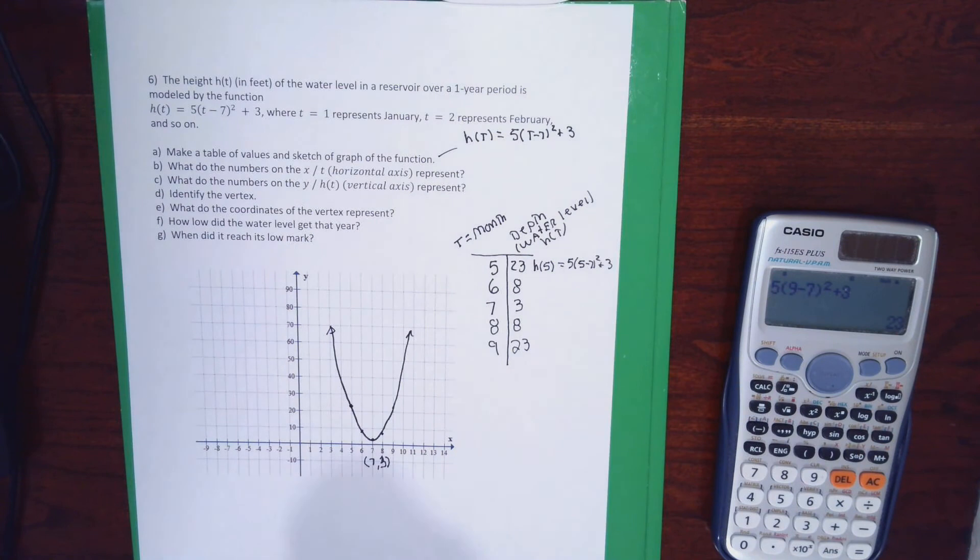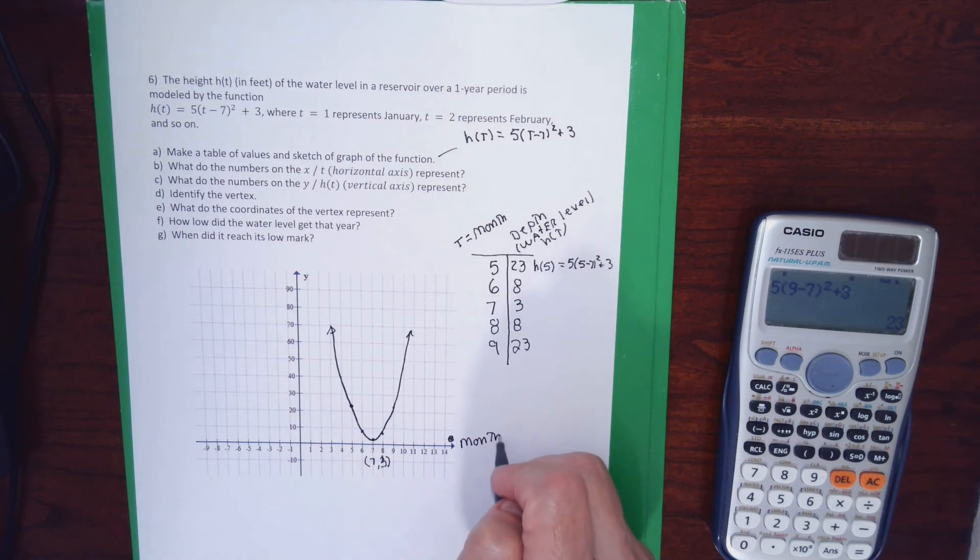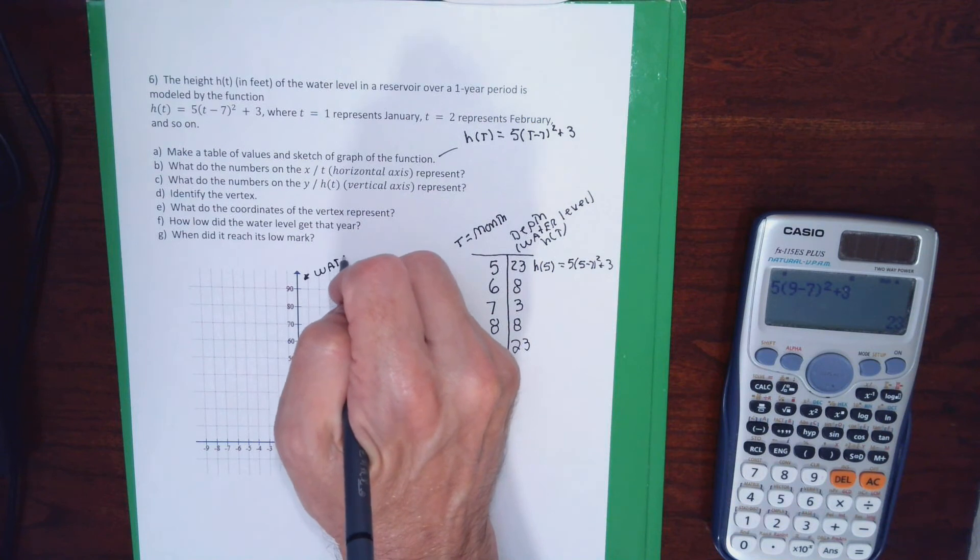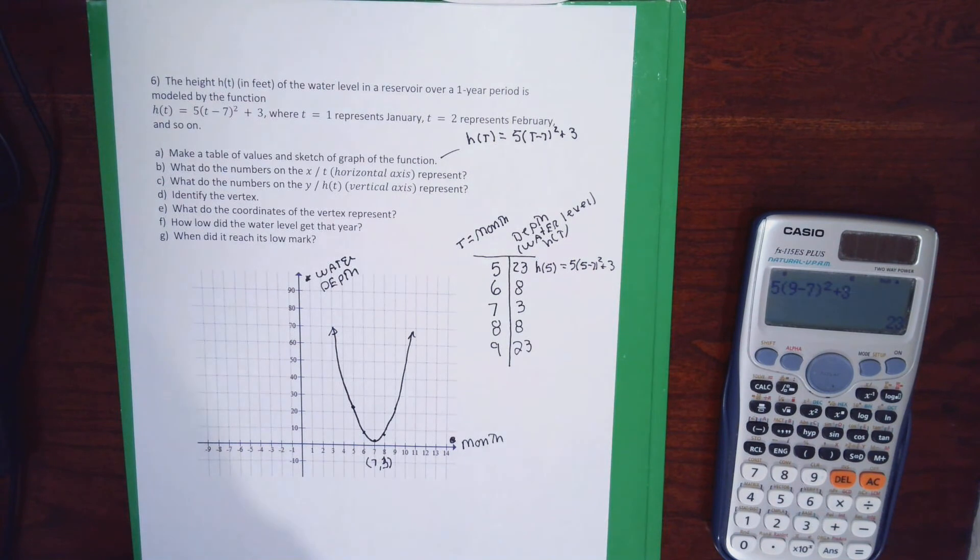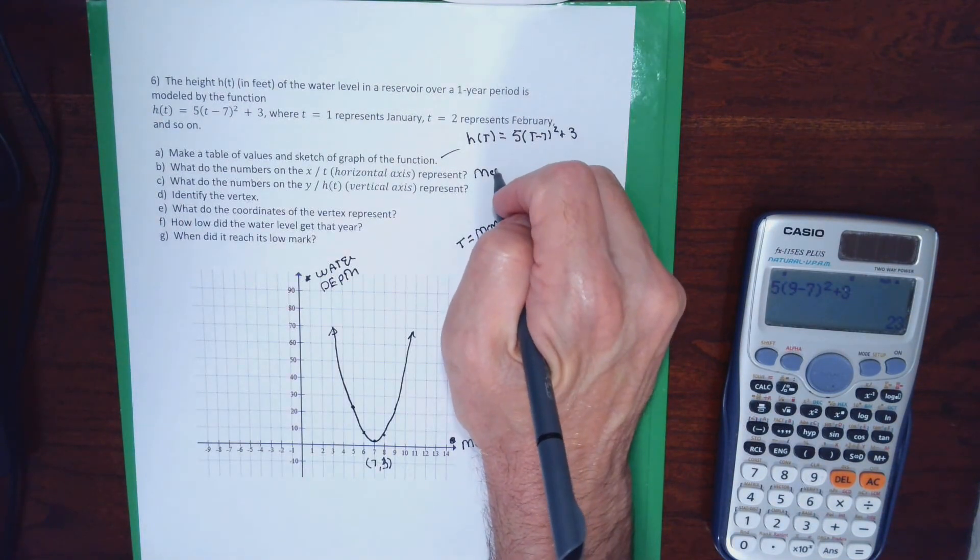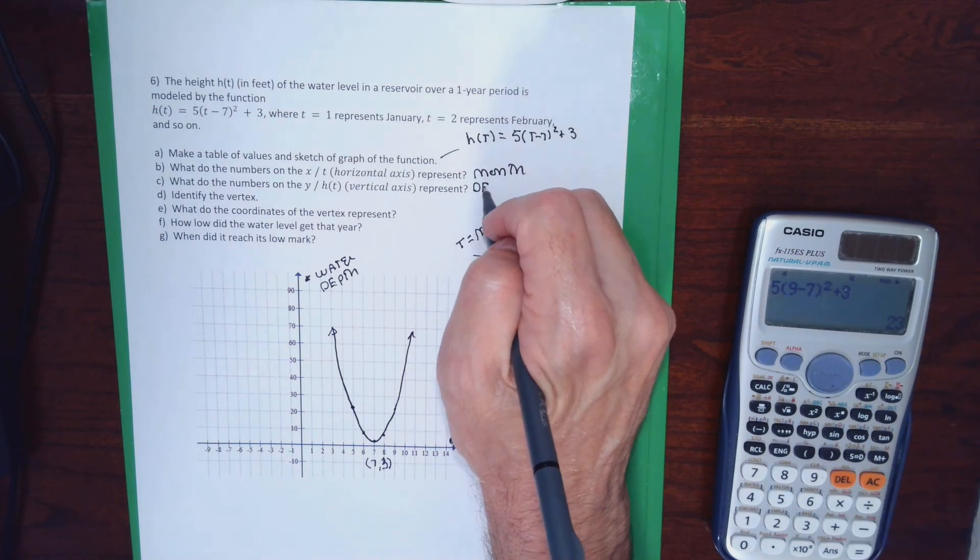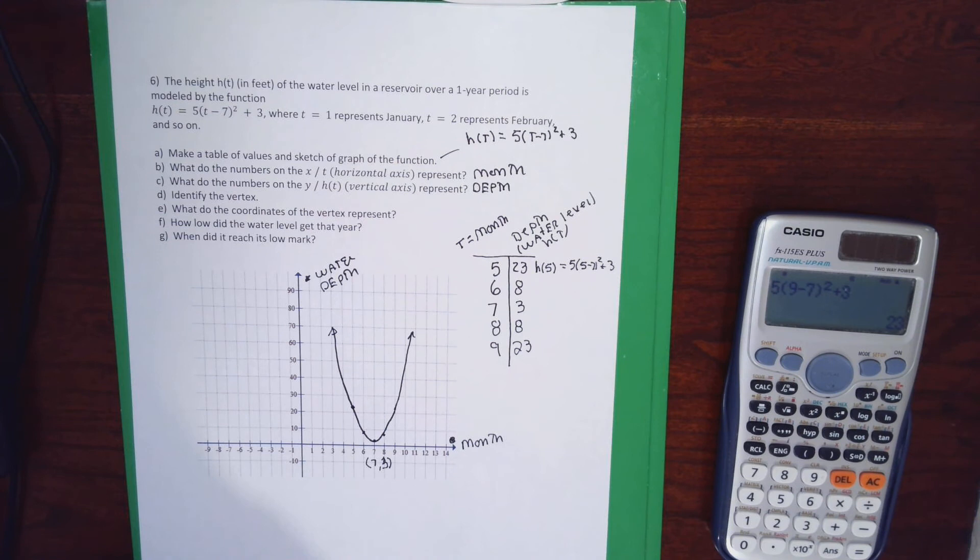I didn't label my axes like the last time, but I should have. The x-axis represents month. And the y-axis represents the depth of the water in the reservoir. So for part B, the numbers on the x-axis represent the month of the year. For part C, the numbers on the y-axis represent the depth.